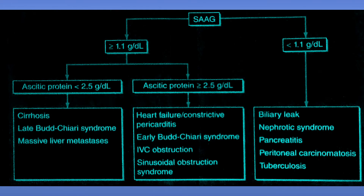Coming to this important chart on the Serum Ascites Albumin Gradient topic. If the SAAG is more than or equal to 1.1, there is portal hypertension. The following conditions are all associated with portal hypertension: cirrhosis, Budd-Chiari syndrome, liver metastasis, right heart failure, IVC obstruction, and sinusoidal obstruction syndrome.